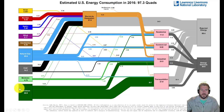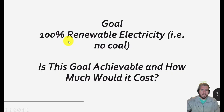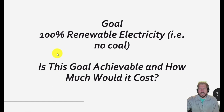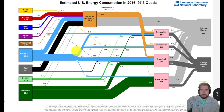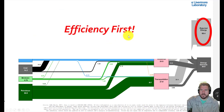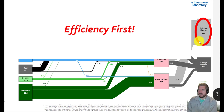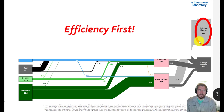Let's not just think about coal — let's think about getting rid of all fossil fuels in the whole energy system. We're going to focus first on electricity: if our goal is 100% renewable electricity, is that goal achievable and how much would it cost? One important note: we should do efficiency first — using less energy before switching to renewable is often cheaper.